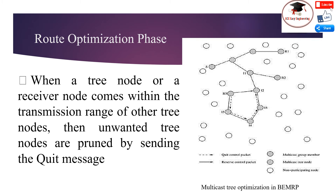The advantages of BEMRP include bandwidth savings due to the reduction in data packet transmissions, easy tree maintenance, and easy addition of new nodes to the group. However, it also has disadvantages: it increases the probability of path breaks, which leads to increased delay and reduced packet delivery ratio. Nodes also spend more time reconnecting due to root repair, causing further delay in packet delivery.